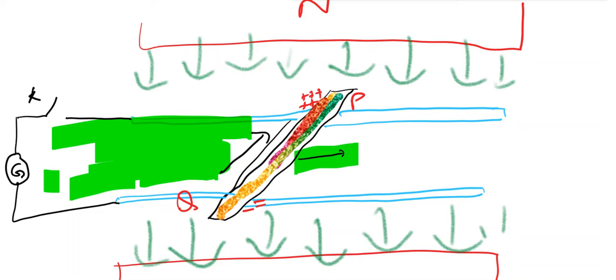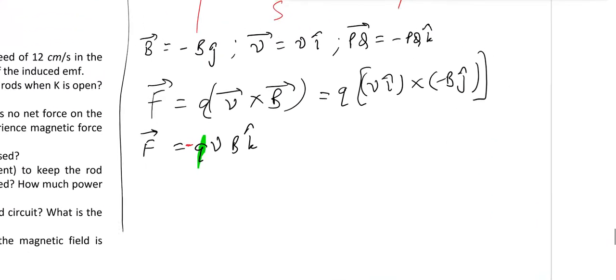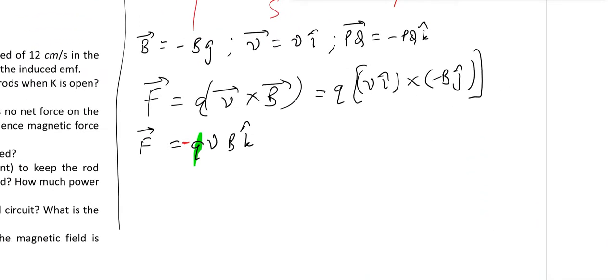P end will become positively charged, and Q end will become negatively charged. Or in other words, you must say that the rod PQ will behave as if it is having a battery with positive terminal here on P side, negative terminal on Q side. So that is one thing we can realize from the situation. One conclusion: P is positive and Q is negative end for the rod.